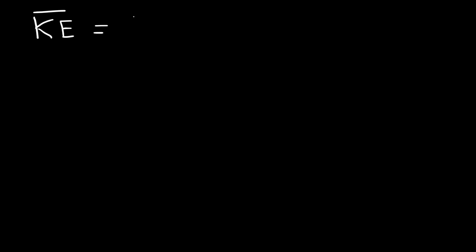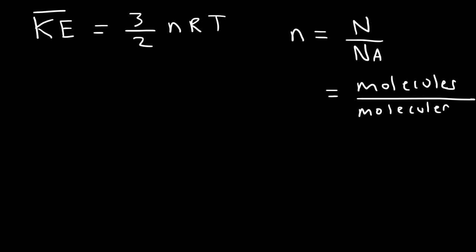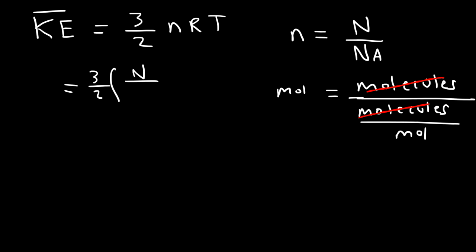Let's talk about how we can derive the first equation from the second. Starting with the formula: average kinetic energy is 3 over 2 nRT. Now, n, the number of moles, is equal to capital N — which represents the number of molecules — divided by Avogadro's number, which is the ratio between molecules and mole. Capital N has the unit molecules; Avogadro's number is 6 times 10 to the 23 molecules per mole. When you divide those two together, the unit molecules will cancel, leaving behind the unit moles. So let's replace lowercase n with capital N over Nₐ.